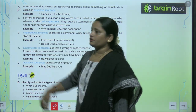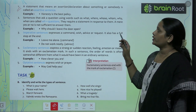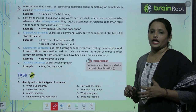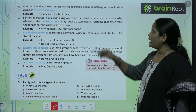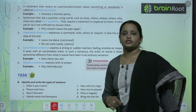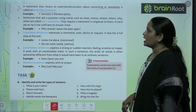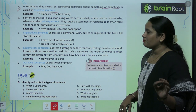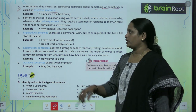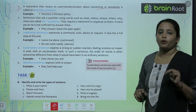The first one is the assertive sentence — a statement that means assertion or declaration about something. Jo sentence kisi cheez ko assert kar raha ho ya phir declare kar raha ho about something or somebody, that is called an assertive sentence. For example, 'Honesty is the best policy.' Assertive sentences can also be negative or positive.